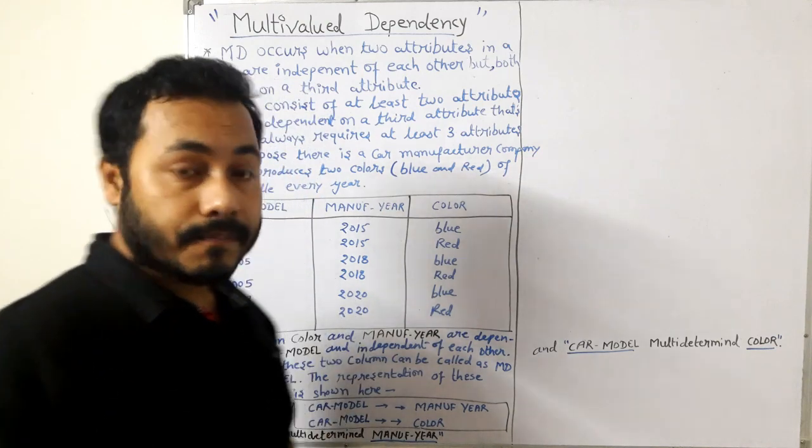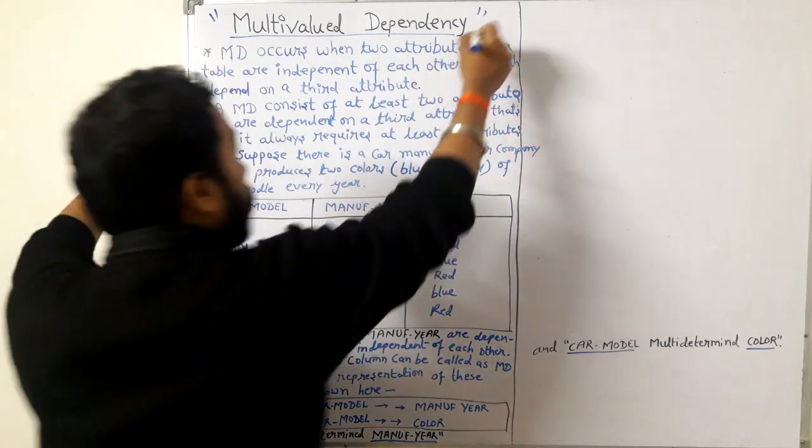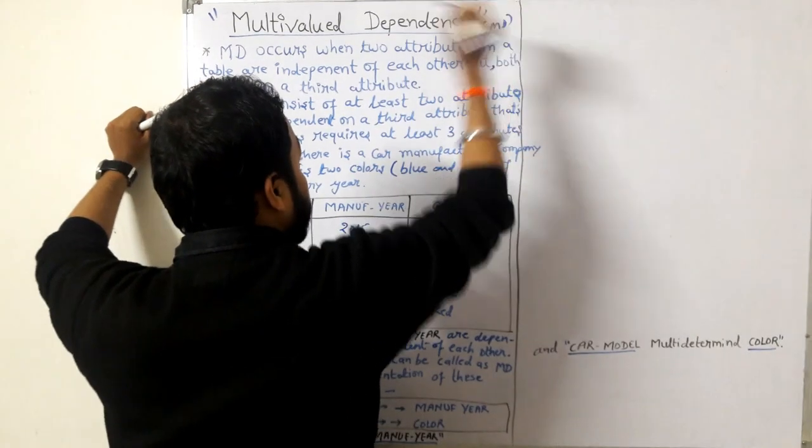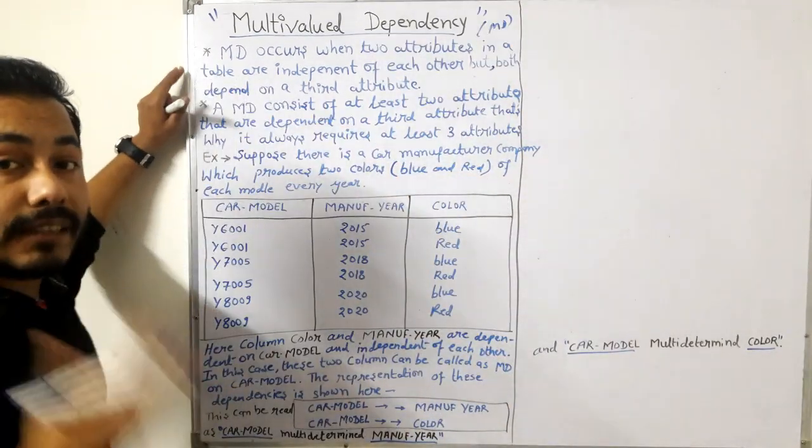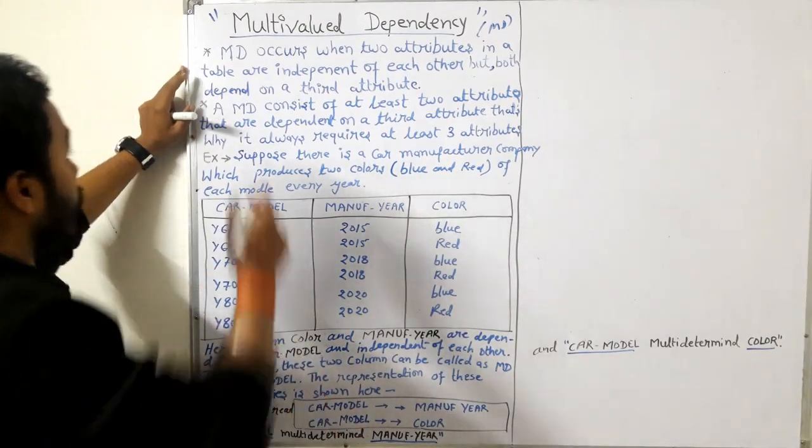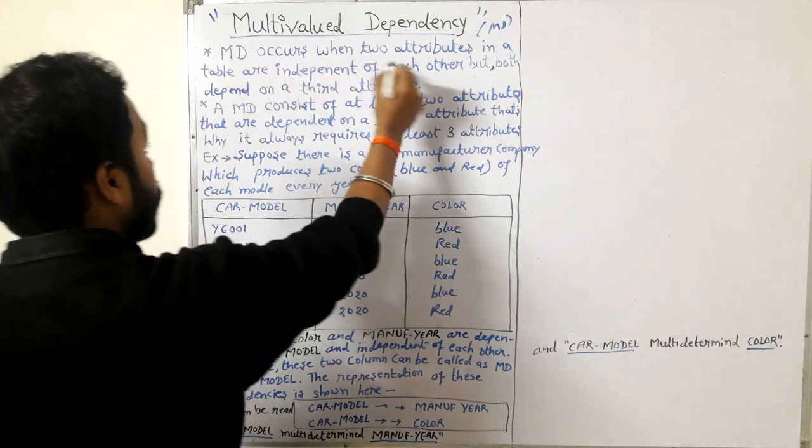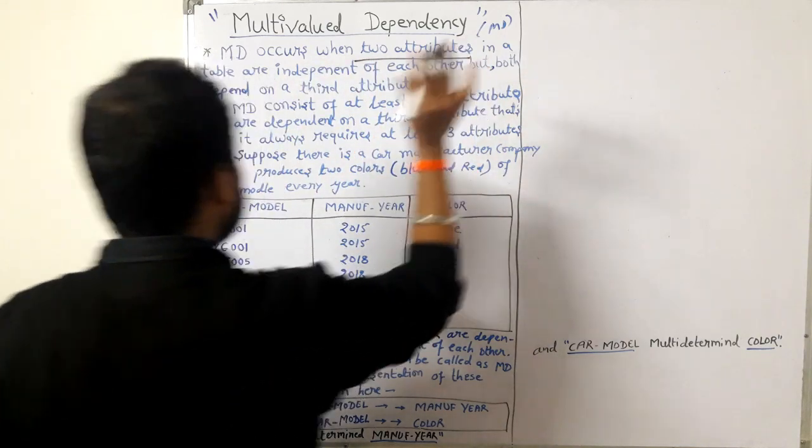Let's start today's class. Multi-valued dependency, in short form MD. When does multi-valued dependency occur? MD occurs when two attributes in a table are independent of each other but both depend on a third attribute.